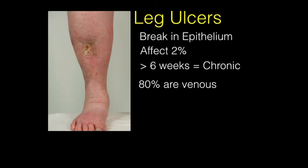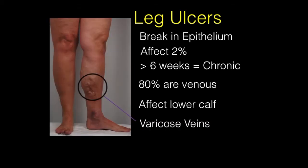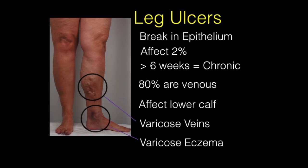4 out of 5 ulcers are caused by a problem with the leg veins and they are called venous ulcers. Venous leg ulcers appear on the lower part of the calf. Often there are varicose veins near the ulcer and sometimes the leg is swollen. Varicose eczema may develop many months or years before the ulcer as a warning sign that the vein circulation is abnormal.